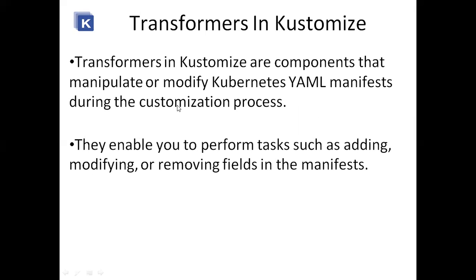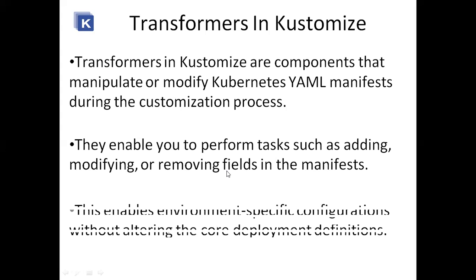Transformers in Kustomize are components that manipulate or modify Kubernetes YAML manifests during the customization process. Without touching the base manifest or changing the original YAML, the transformers in Kustomize only modify the Kustomization.yaml file. They enable you to perform tasks such as adding, modifying, or removing fields in the manifest.